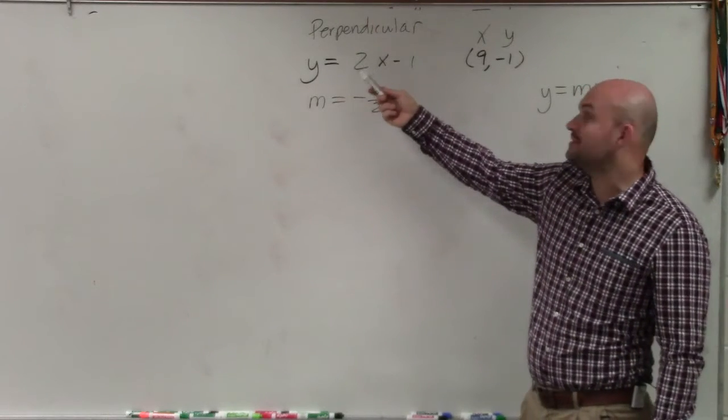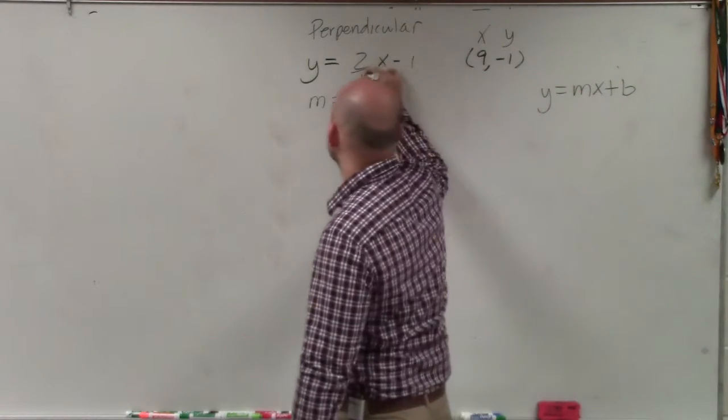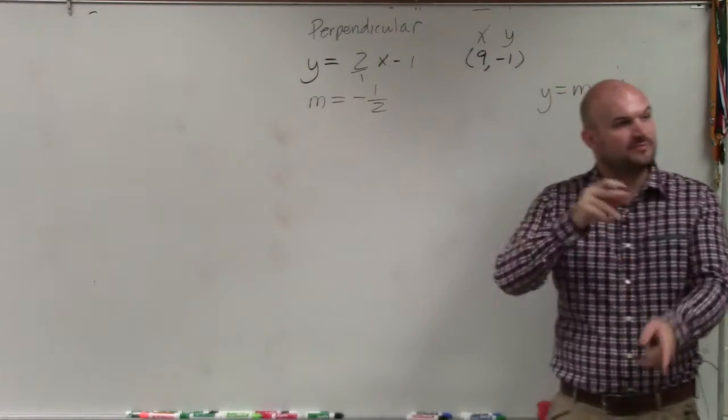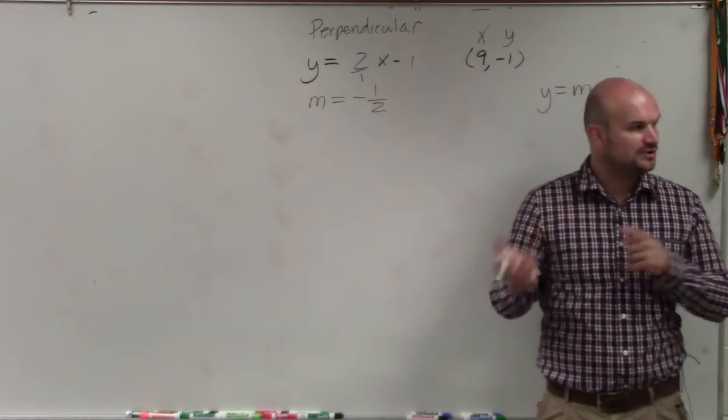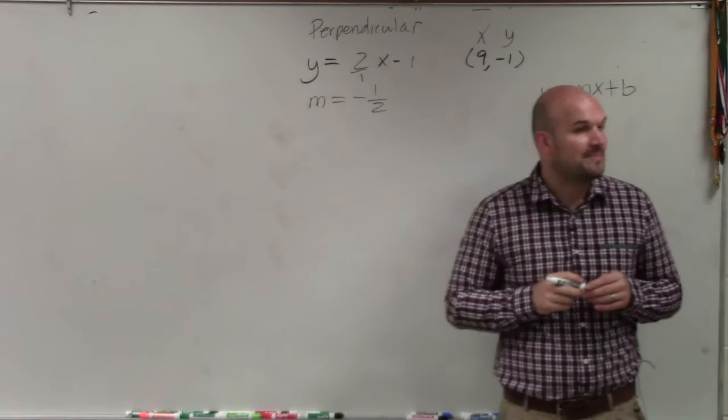If it's not written as a fraction, you've got this. Basically, this is written as a fraction of 2 over 1. You just flip the numerator and the denominator. They're just reciprocals of each other. We call it opposite reciprocals.